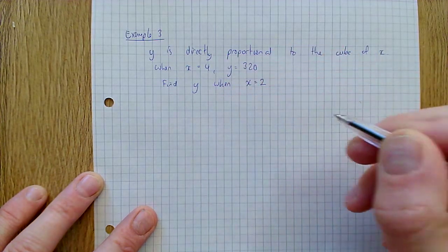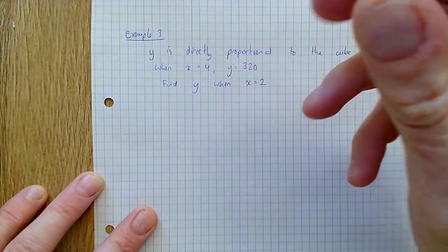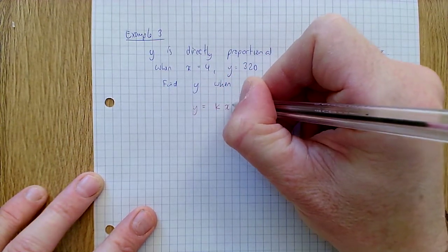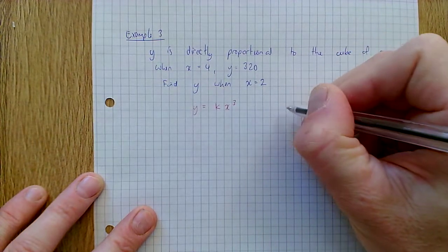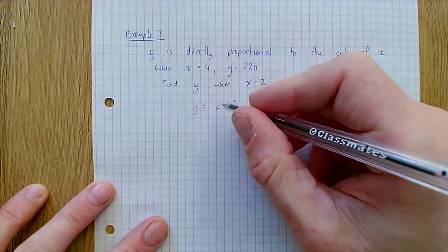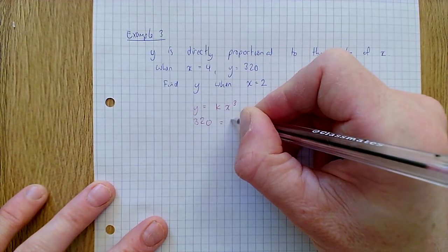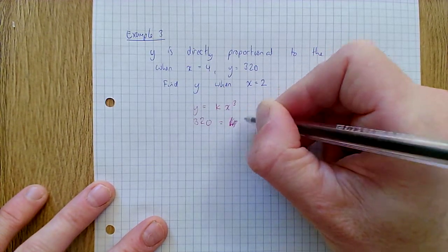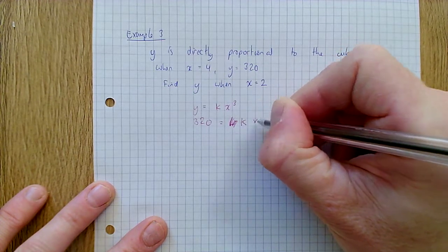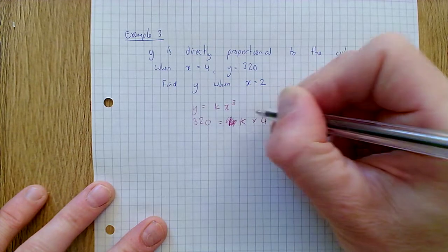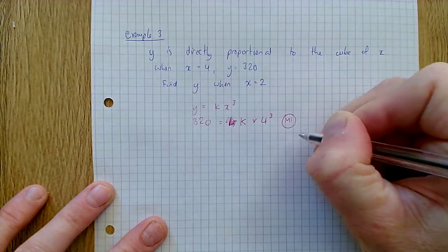So we rewrite it: y equals k x cubed. That's the first thing. And then we put in the values we know. So we know that 320 equals k times four cubed. And that gets you probably one method mark.